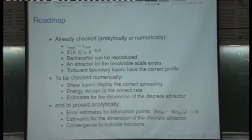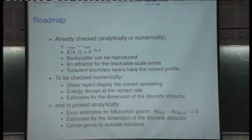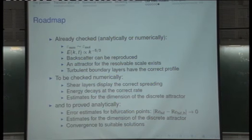There are things we still have to check. Convergence to suitable solutions is already proved. We don't have an estimate for the dimension of the discrete attractor, but we have one for the attractor associated to the subscales and hope it will lead to a final estimate. We haven't done anything about bifurcation yet. We have checked numerically that energy decays at the correct rate — there is a paper published last year showing this. This talk is from 2012, but we have been working on that since then.